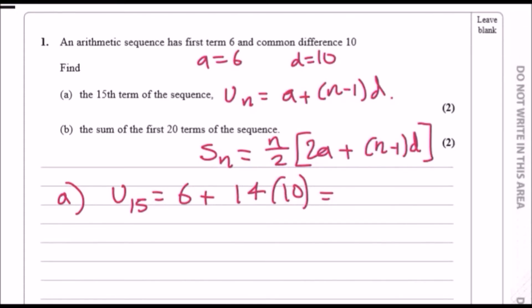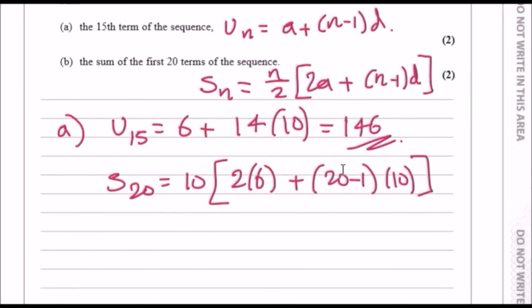As for the sum to the first 20 terms, S20, plug in 20. You should have 20 over 2, which is a 10, or you can just smash in a calculator. 2 times a, so 2 times 6, plus 20 minus 1 times 10. If you enter this correctly, you should get a total result of 2020.